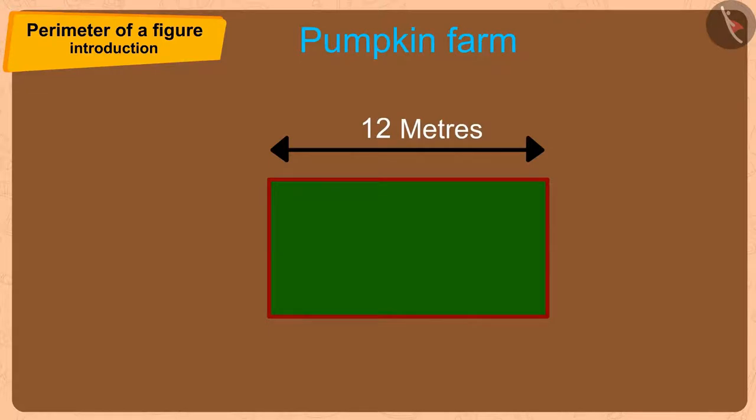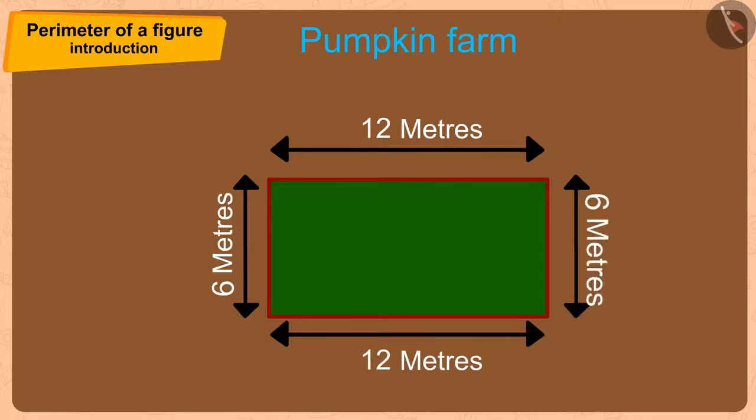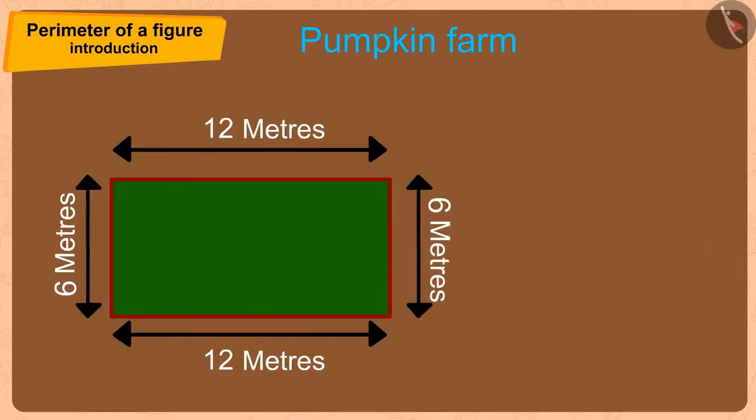The rectangle-shaped fence is 12 meters in length and the width is 6 meters. Every rectangle has two long edges and two wide edges. In this way, the size of this rectangular fence will be arrived at by adding 12 and 6 with 12 and 6 again. That is 36 meters.